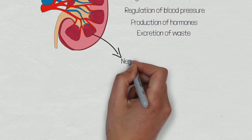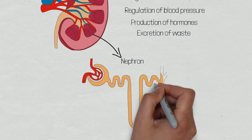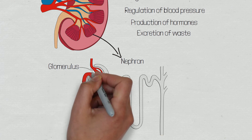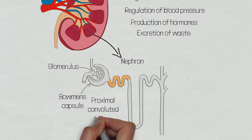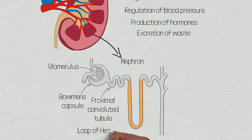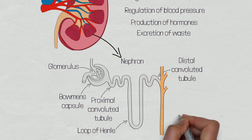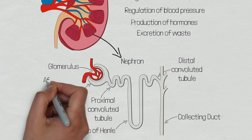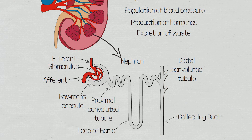The nephron is the functional unit of the kidney responsible for filtration, reabsorption, secretion, and excretion. There are approximately 1 to 1.5 million nephrons in each kidney. The nephron consists of several key structures including the glomerulus, the Bowman's capsule, the proximal convoluted tubule, the loop of Henle with its descending and ascending limbs, the distal convoluted tubule, and the collecting duct. The glomerulus is a network of capillaries where blood enters via an afferent arteriole and exits via an efferent arteriole. The Bowman's capsule is the filtering unit.